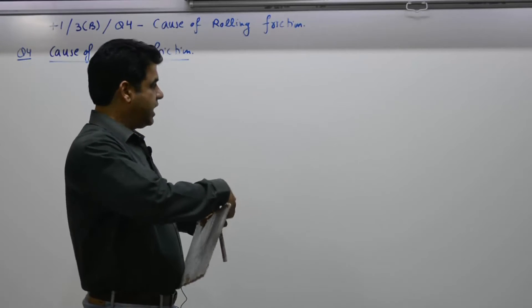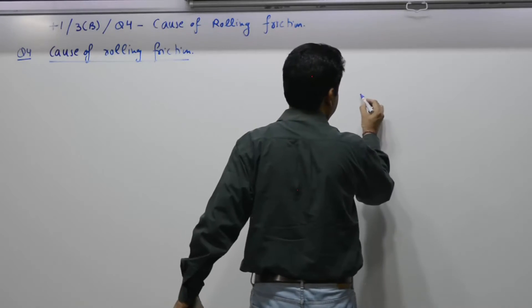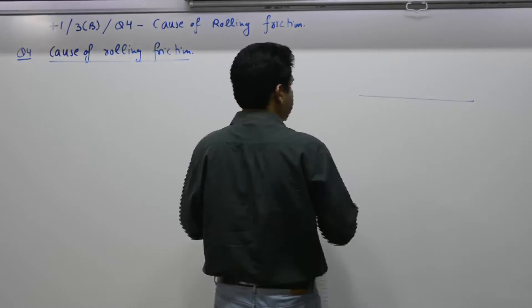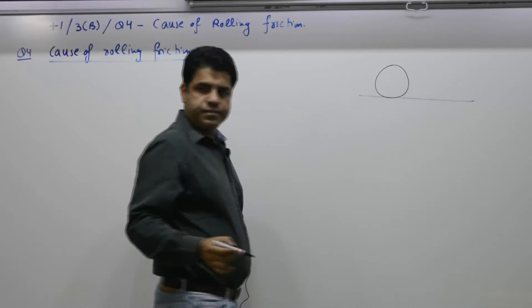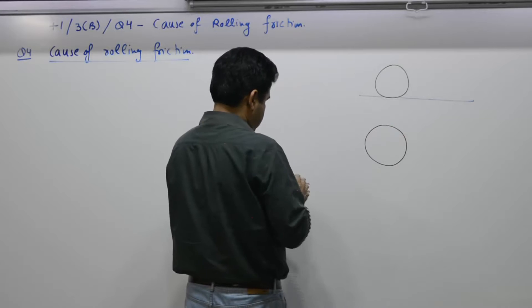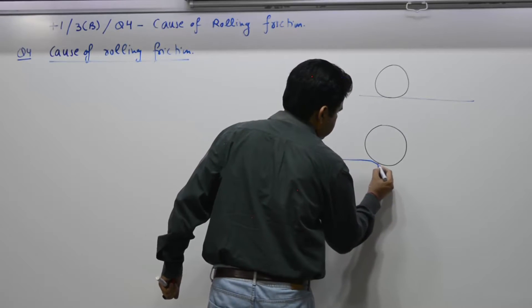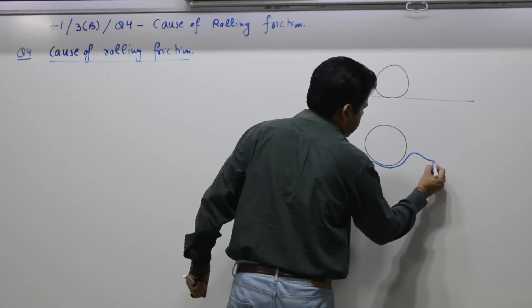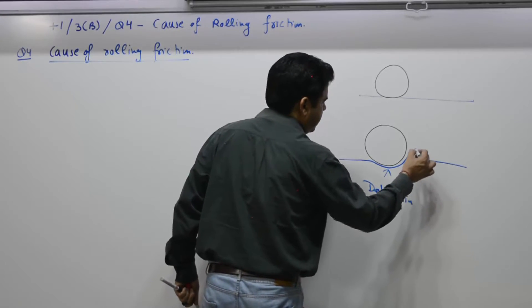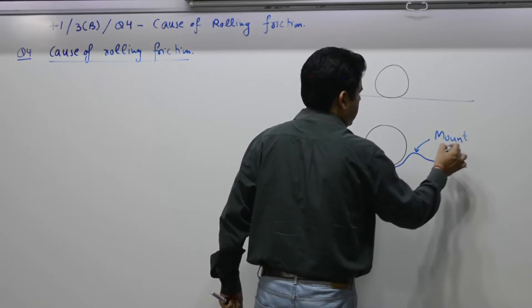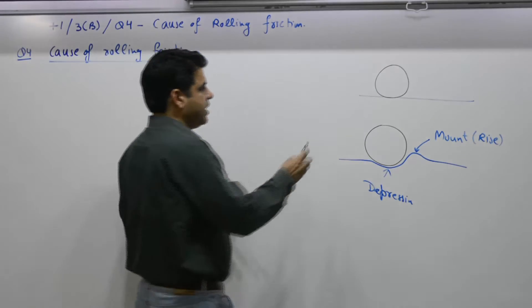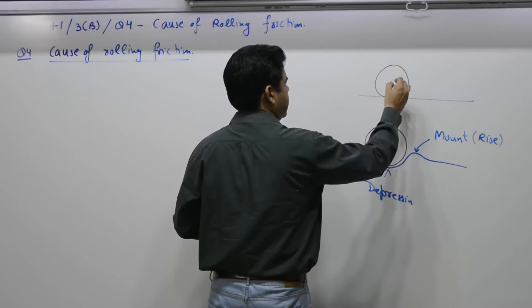Under ideal conditions, this is the floor and a ball. But in practice, when you place an object, exactly below it what you get is a depression, and on the leading side what you get is a rise or mount.